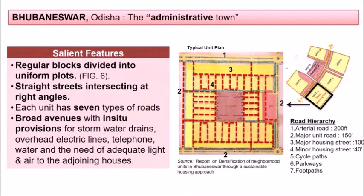Within each of the six units, there were regular blocks divided into uniform plots, with straight streets intersecting at right angles. Each unit had seven types of roads with broad avenues and in-situ provisions for storm water drains, overhead electric lines, telephone lines, water supply network, and adequate light and air to adjoining houses. The arterial road was about 200 feet wide.